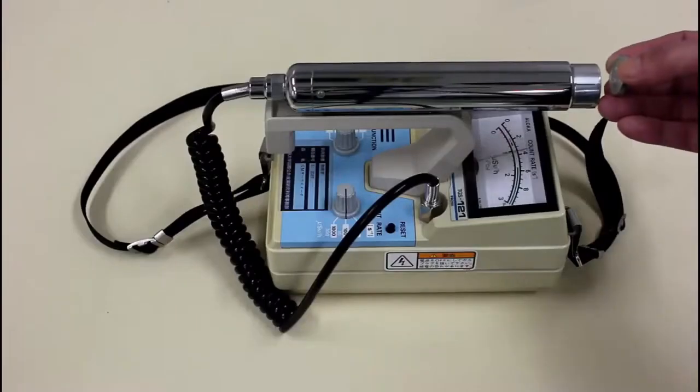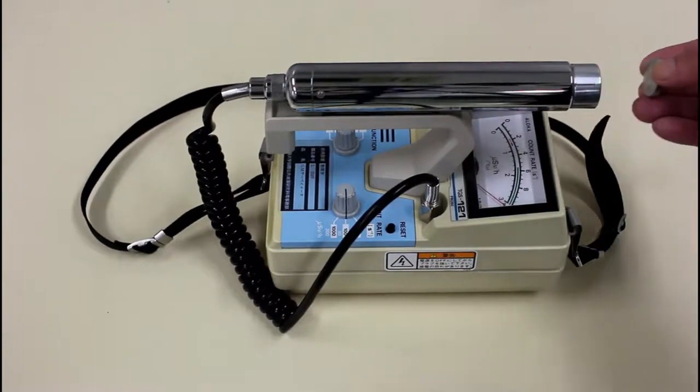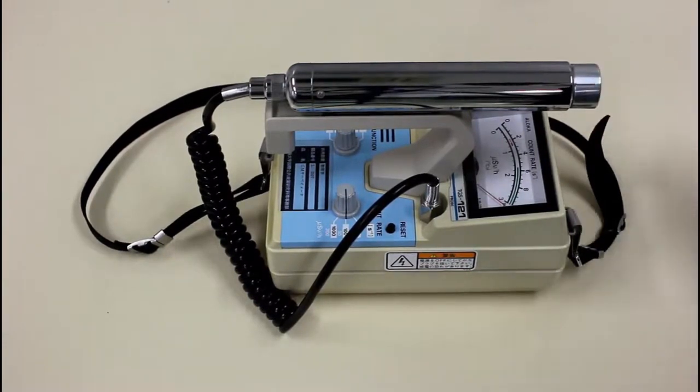Let's place the radiation source in front of the detector. You can see that the source is emitting radiation frequently. What happens if we move the radiation source away from the detector? The reason why the detector sounds even when there is no radiation source is because radiation exists in nature.